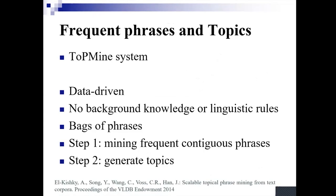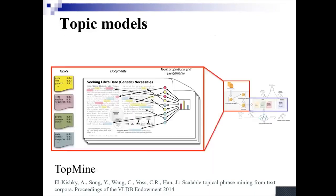For the first part, we use an existing system called the TopMine system. It's a data-driven system — it does not need any background knowledge nor linguistic rules. It works on phrases rather than on words, and it has two steps. In the first step, contiguous phrases are collected and counted, and phrases that occur at least as often as a given threshold are considered frequent phrases. In the second step, topics are generated. Essentially, topics can be seen as a probability distribution over words or phrases.